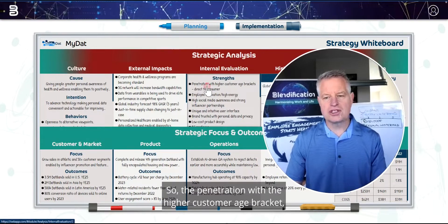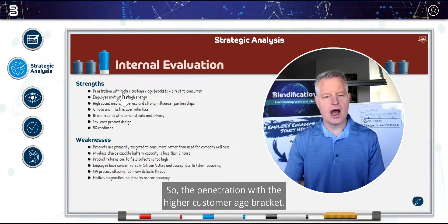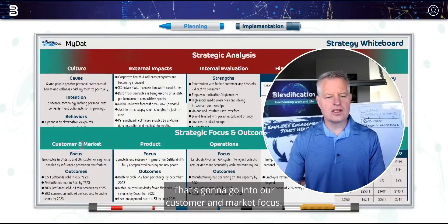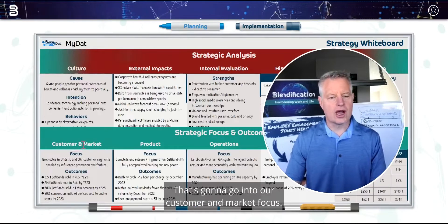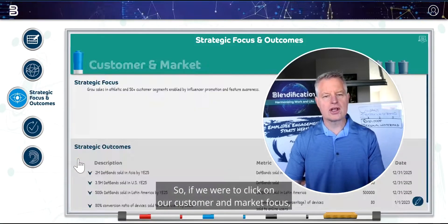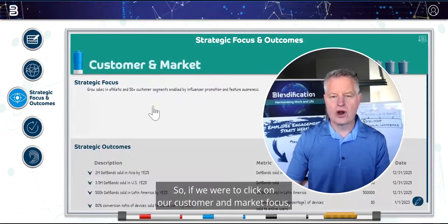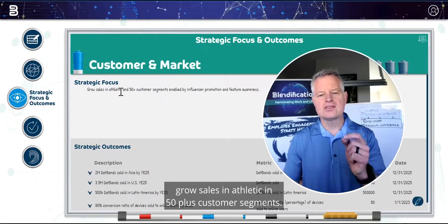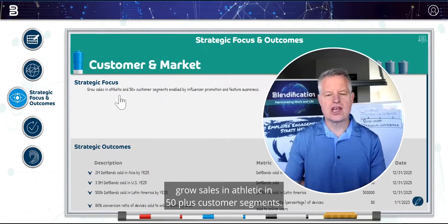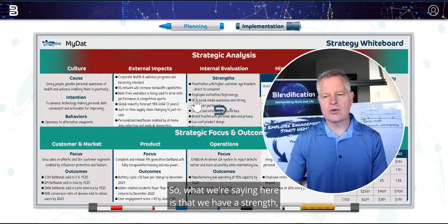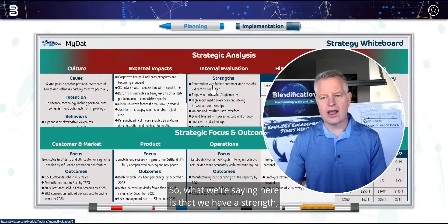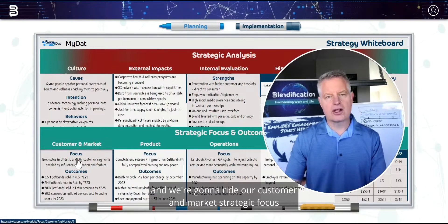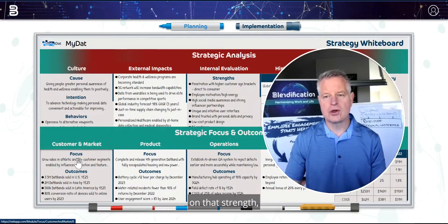So the penetration with the higher customer age bracket — where is that going to go? That's going to go into our customer and market focus. So if we were to click on our customer and market focus, we see: grow sales in athletic and 50-plus customer segments. What we're saying here is that we have a strength, and we're going to ride our customer and market strategic focus on that strength.